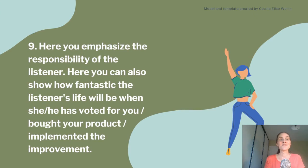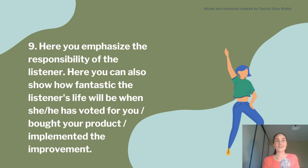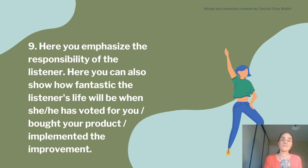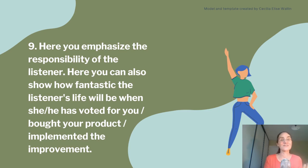Number nine: here you emphasize the responsibility of the listener. Remember, in the beginning you made your listener feel like a hero — and heroes have responsibilities in stories and in real life. So you remind your listener of their responsibilities. And don't use this method in a manipulative way. The audience will probably detect it and will lose trust in you if you are trying to manipulate them. And even worse, if you manage to manipulate them — don't do that.